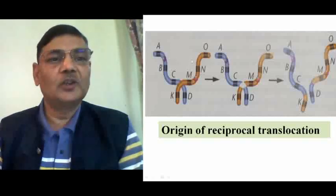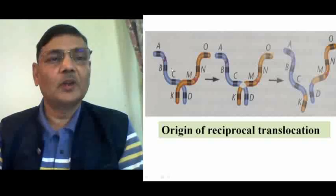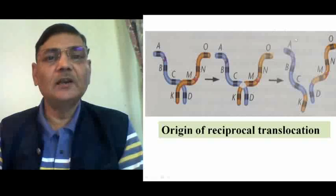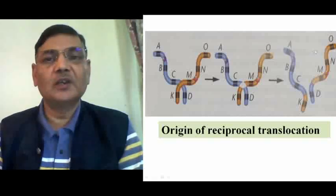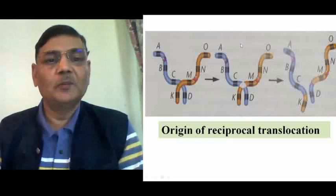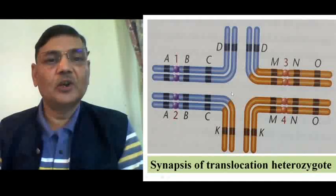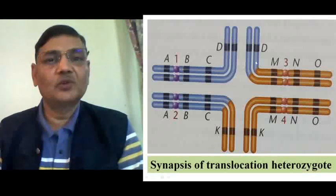If an individual carries both the normal chromosomes — those shown on the left — and the translocated chromosomes shown on the right, that individual will be a translocation heterozygote. We can now examine what happens during gametogenesis. The germ cells carrying such chromosomes will undergo meiotic division.